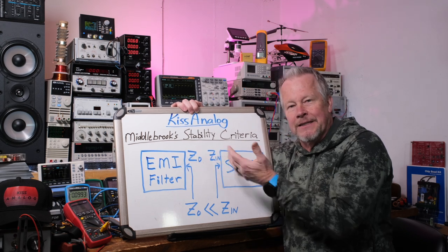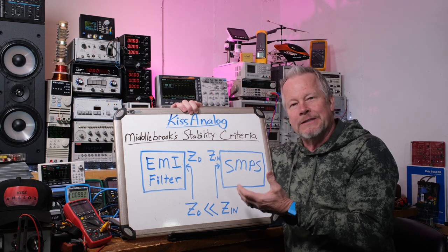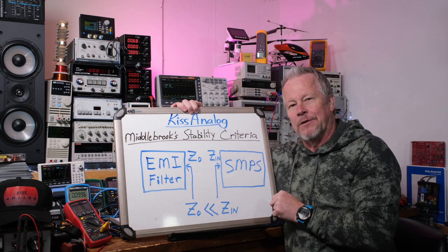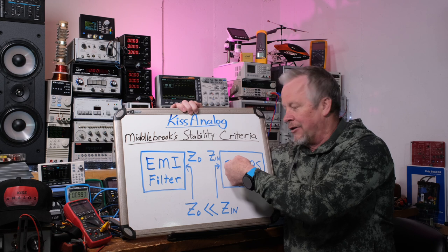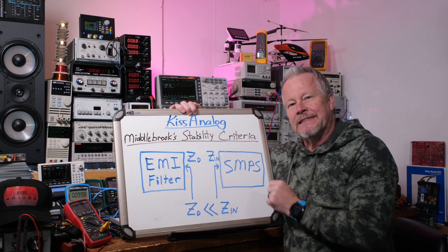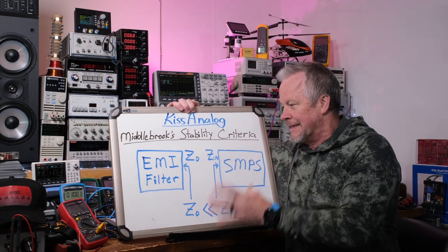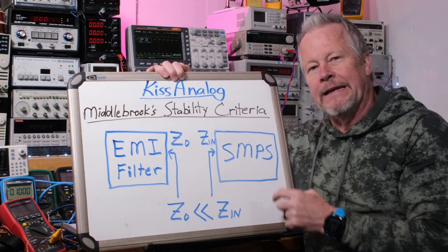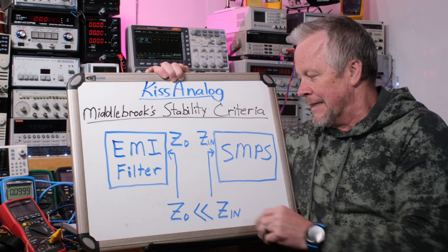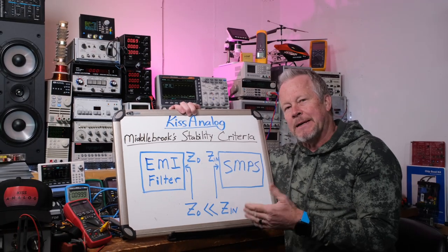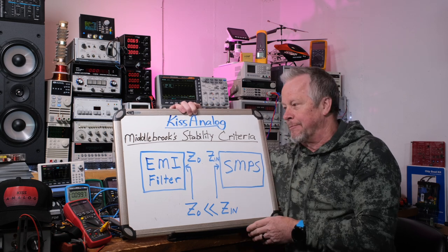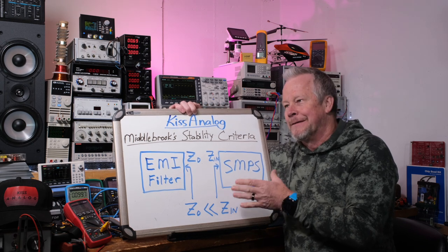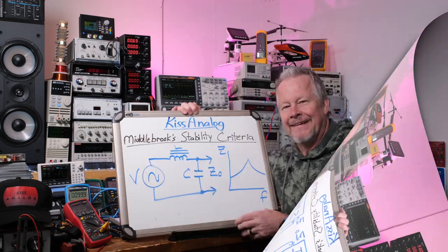The EMI filter — if you're looking into it as a power supply, or as the power supply is looking into the EMI filter to see what impedance it has and what power it can give — that's called the output impedance of the EMI filter, Z_out. Looking into the power supply, that's Z_in. Essentially what this means is that the output impedance of the EMI filter has to be much lower than the input impedance of the power supply: Z_out much lower than Z_in. Seems pretty basic, but let's explain this further.